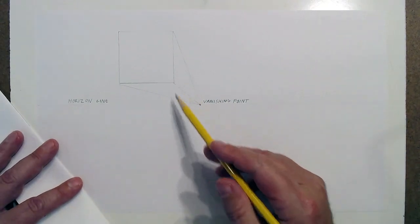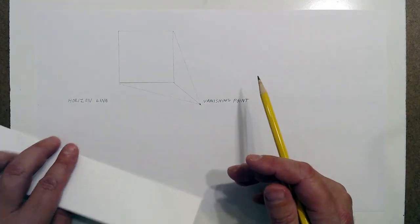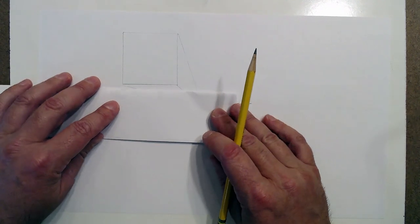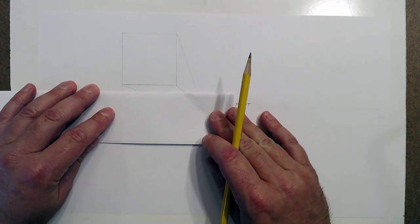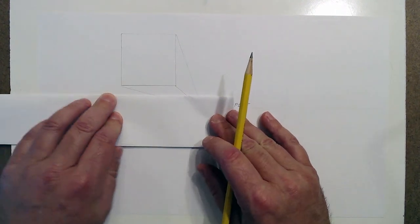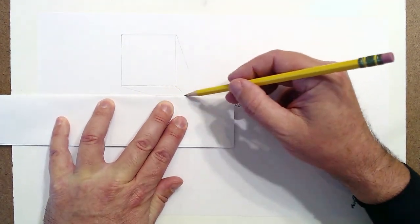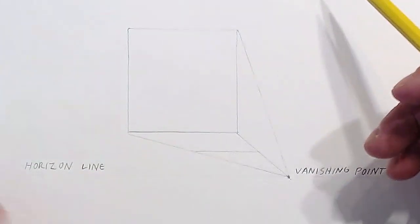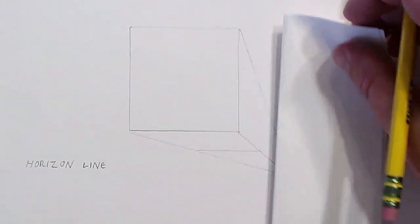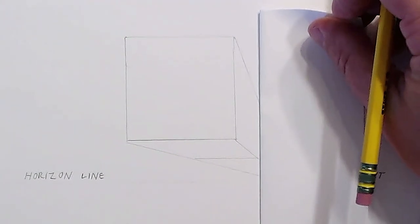So all the corners draw down to the vanishing point. Now you can use your ruler and make another horizontal line right here. That'll be the back of your cube, and try and keep them parallel that way. And this way, now vertical.